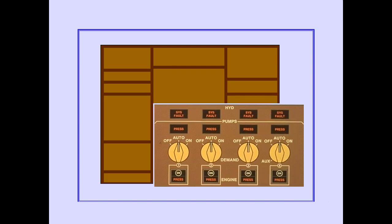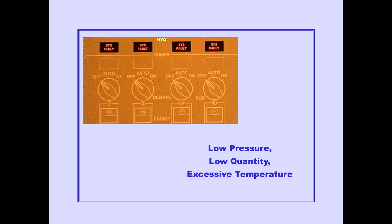The controls and indicators that operate the hydraulic systems are located on the overhead panel. A system fault light for each hydraulic system is located on the panel. These lights illuminate to indicate system low pressure, low fluid quantity, or excessive fluid temperature.